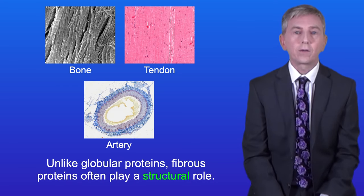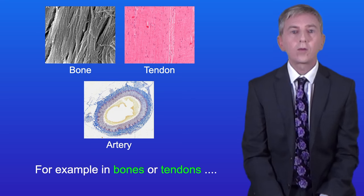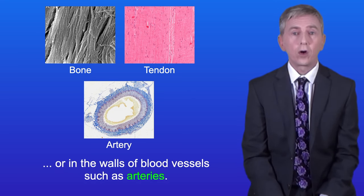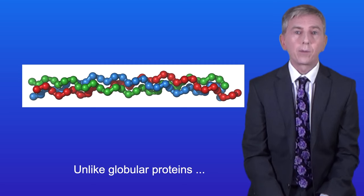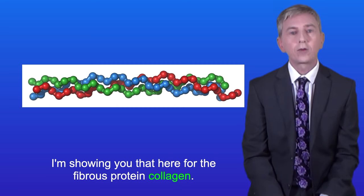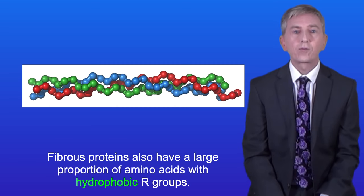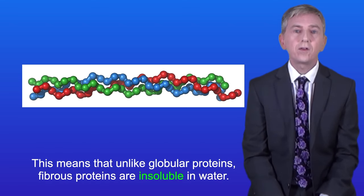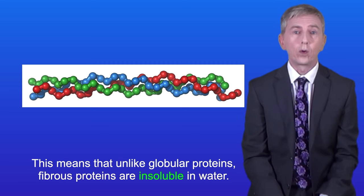Unlike globular proteins, fibrous proteins often play a structural role, for example in bones, tendons, or in the walls of blood vessels such as arteries. Fibrous proteins tend to form long rope-like molecules, as shown here for collagen. They also have a large proportion of amino acids with hydrophobic R-groups, which means that unlike globular proteins, fibrous proteins are insoluble in water.